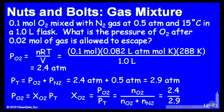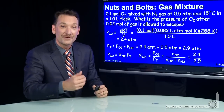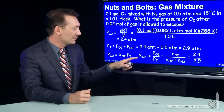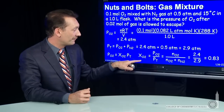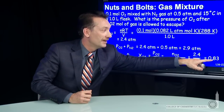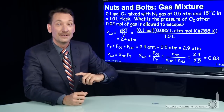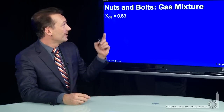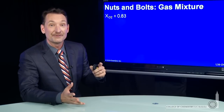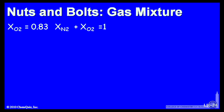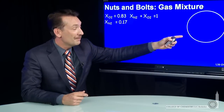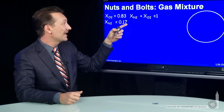So the partial pressure of oxygen is 2.4 atmospheres and the total pressure is 2.9 atmospheres. The fraction of the pressure that comes from oxygen — 2.4 over 2.9 — gives you the mole fraction in the sample. So 0.83 of the molecules are oxygen, about 83%. Since the mole fractions must add up to 1, that means about 0.17 mole fraction is nitrogen.